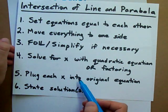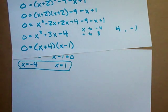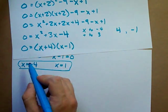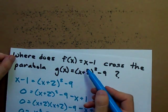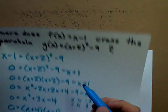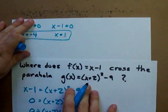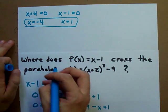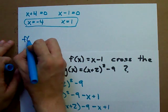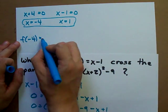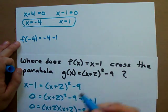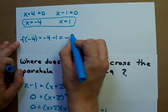Plug each x into original equation. So, I'm going to plug negative 4 into either one of these. Well, this one certainly seems easier. So, let's plug negative 4 in there. f at negative 4 is x minus 1. Negative 4 minus 1. Turns out to be negative 5.